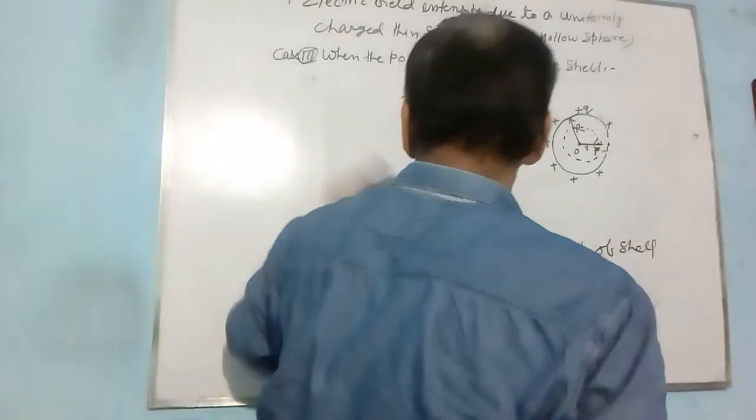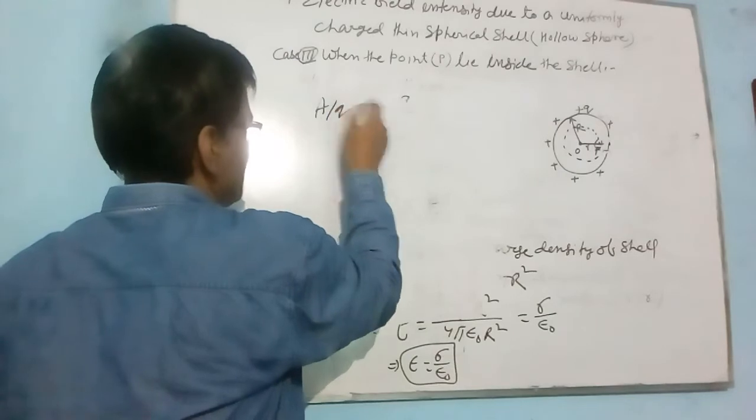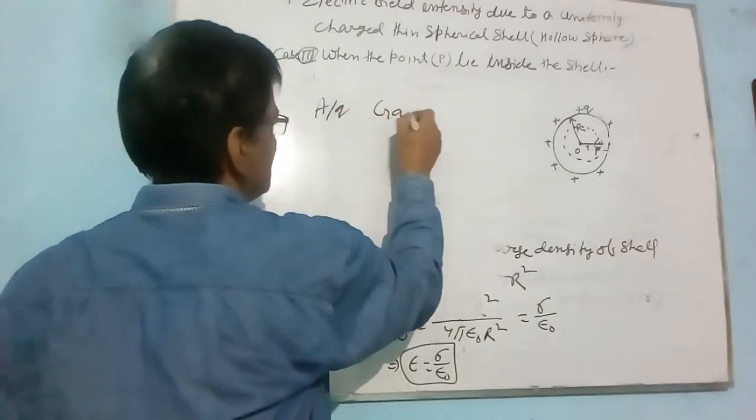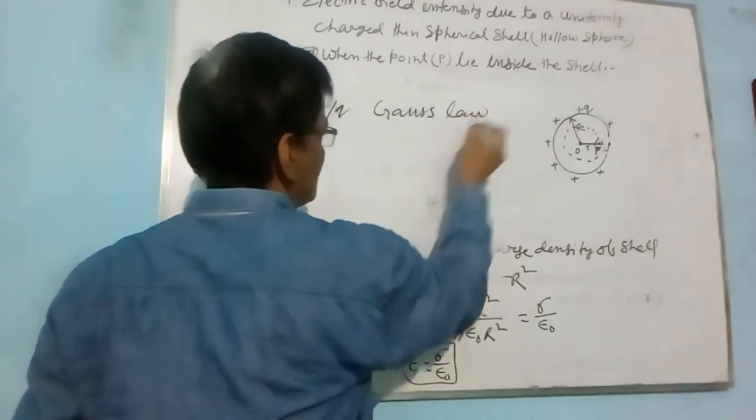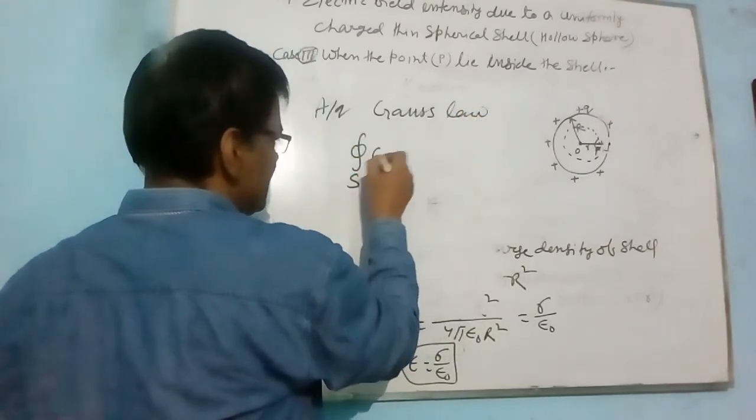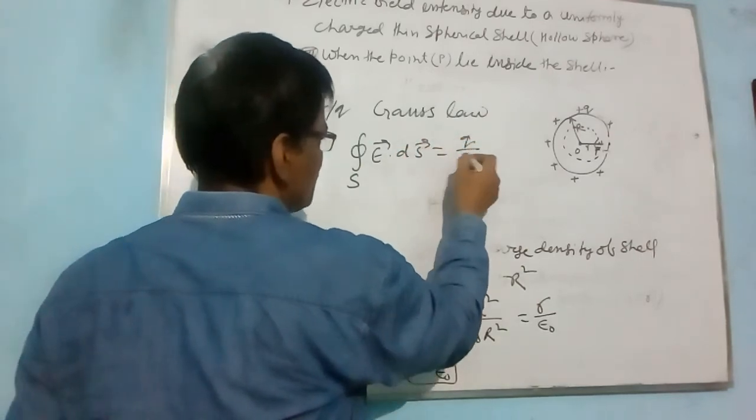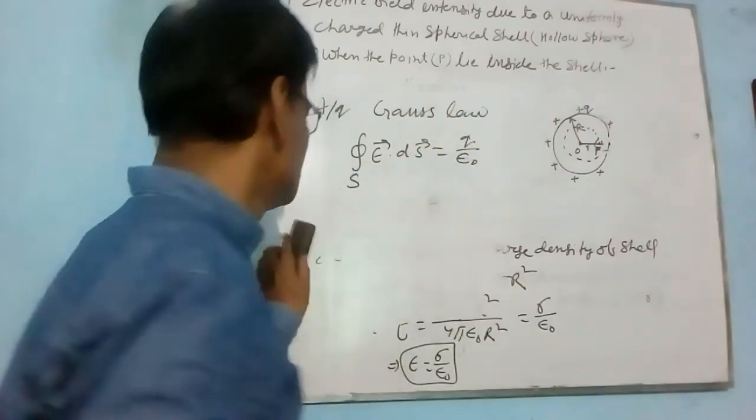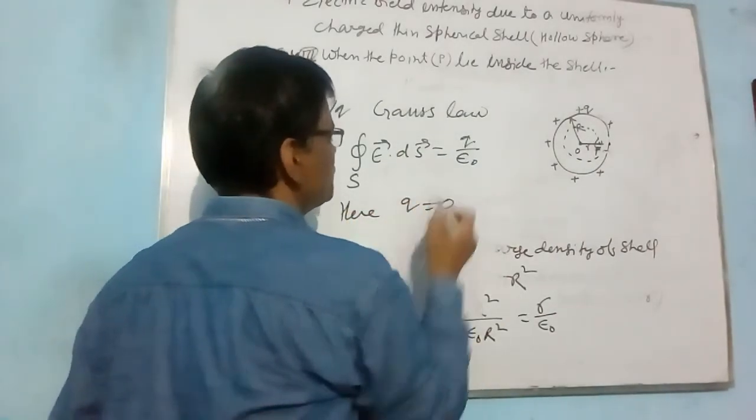As according to Gauss law, line integral of E·dS is equal to Q by epsilon 0. Here, Q is equal to 0. Why?